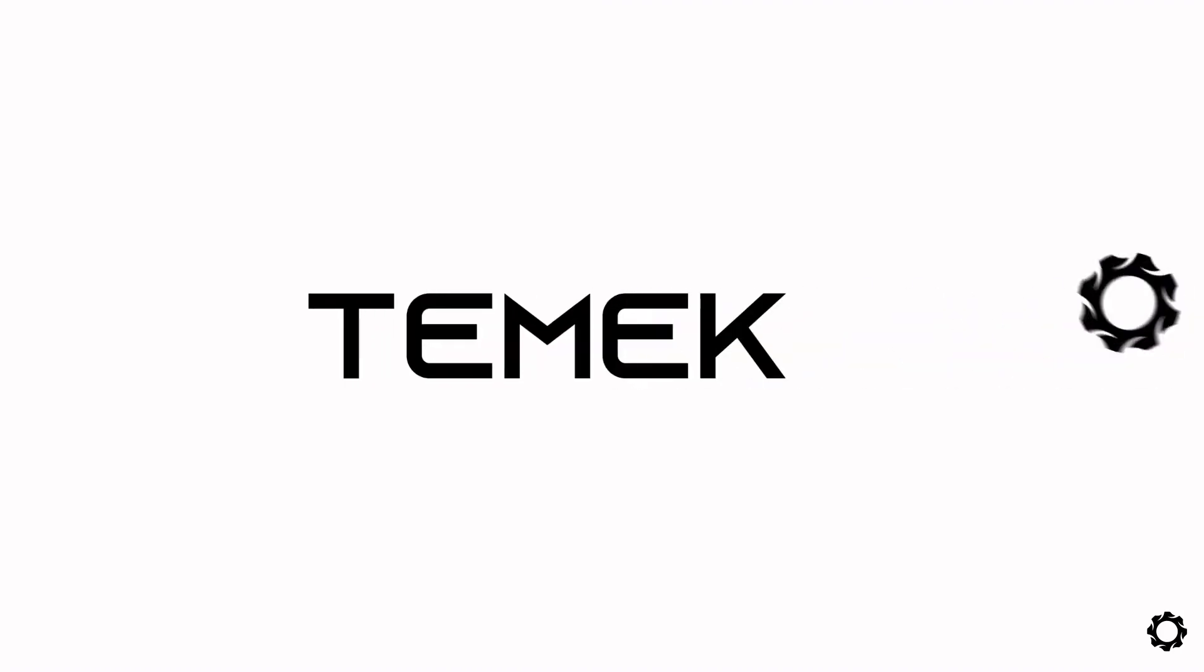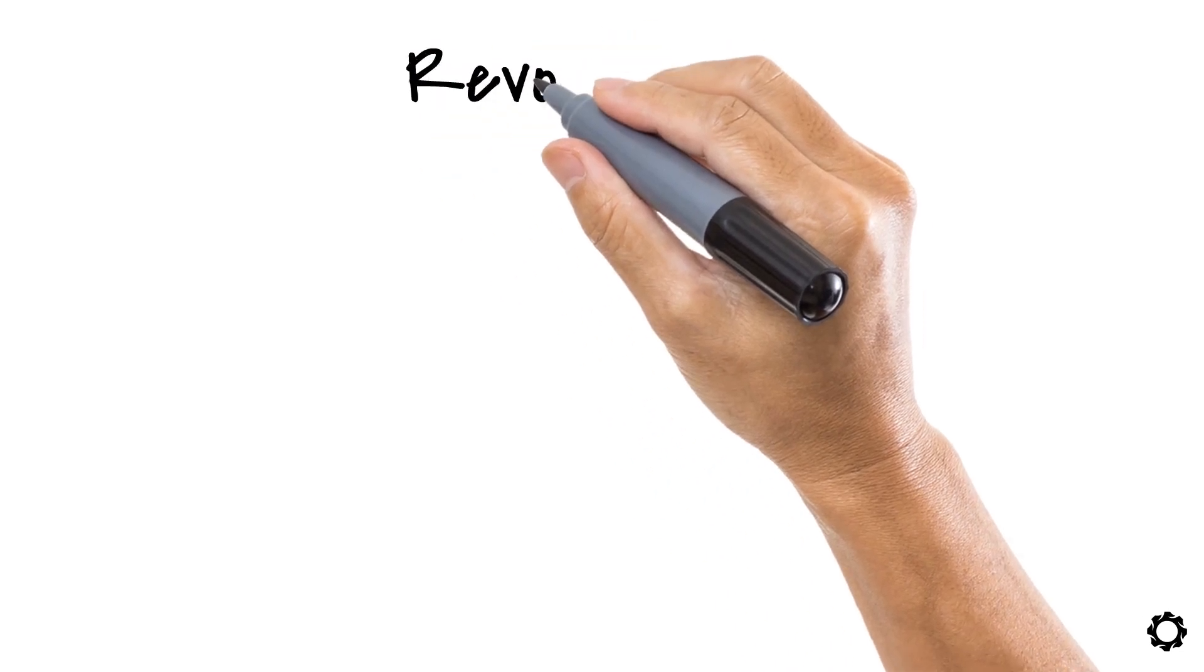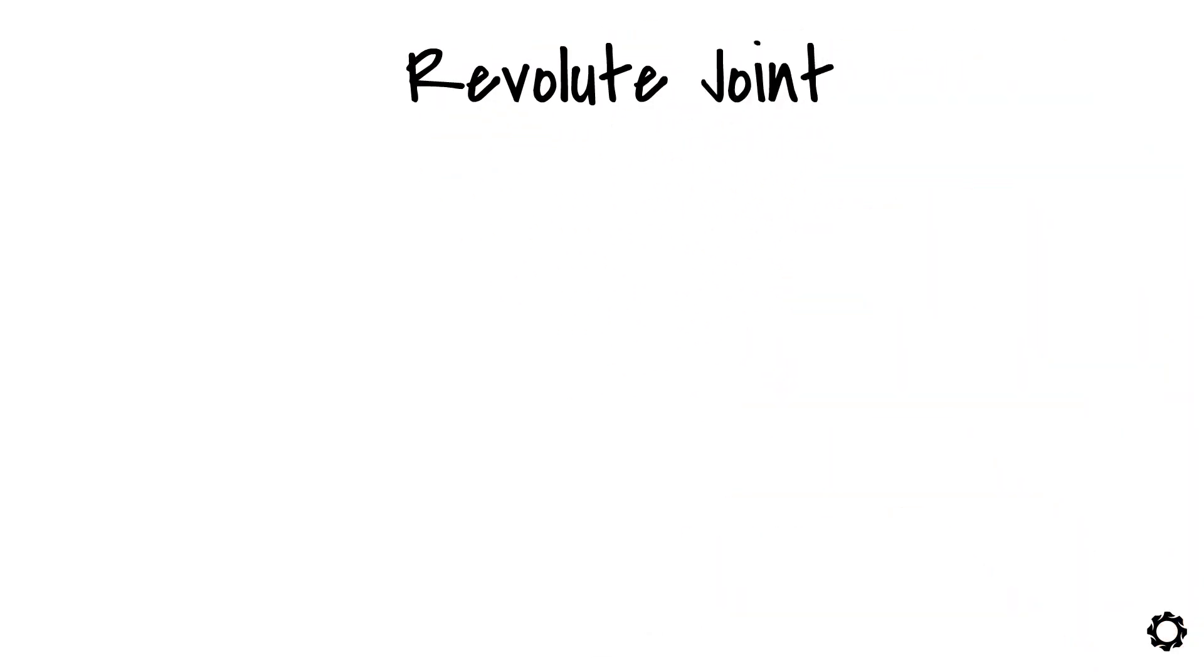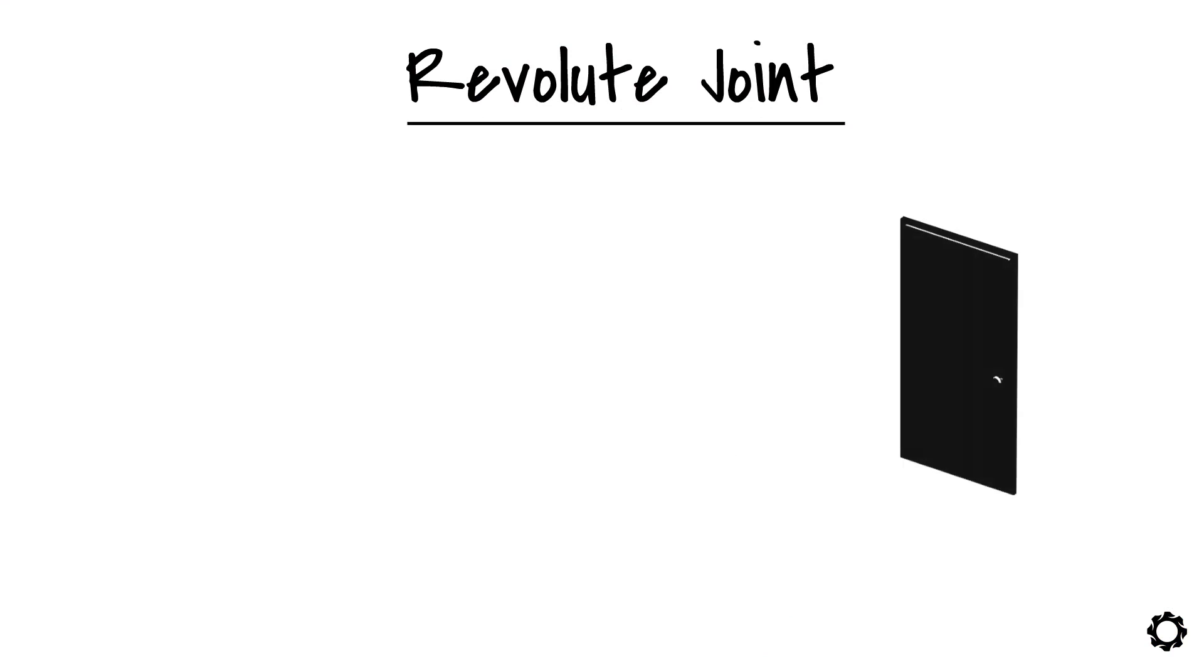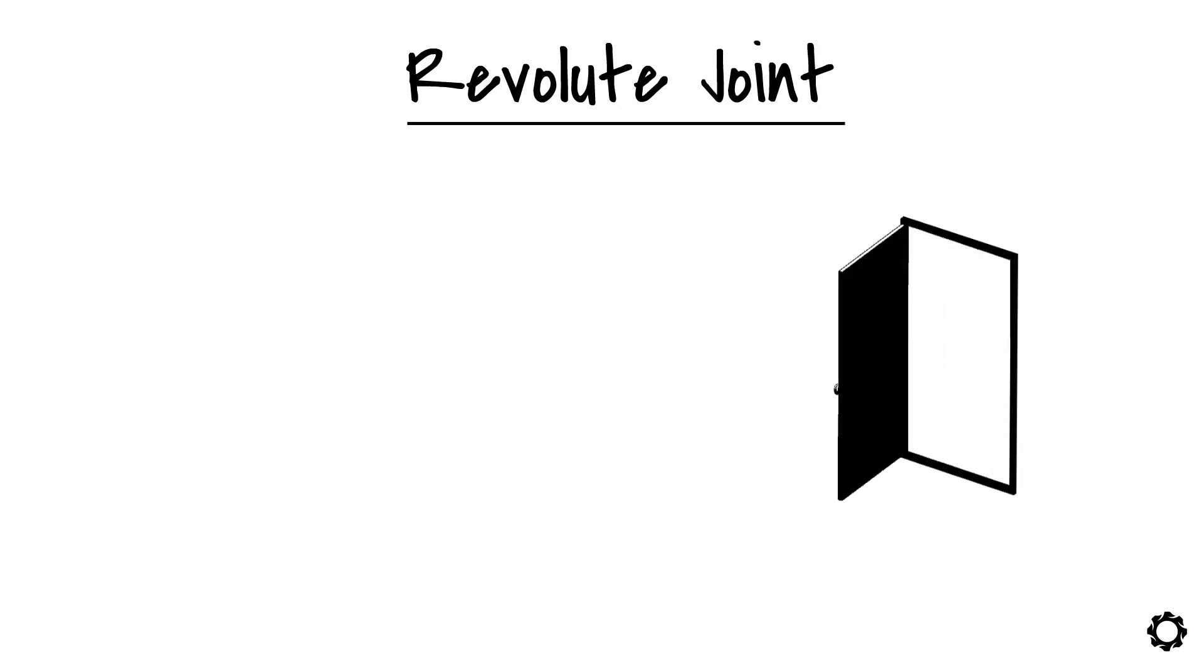Hi and welcome to Temeco. In this video, we will talk about one of the most used constraints in mechanical systems. I refer to the revolute joint or hinge joint for its similarity to door hinges.